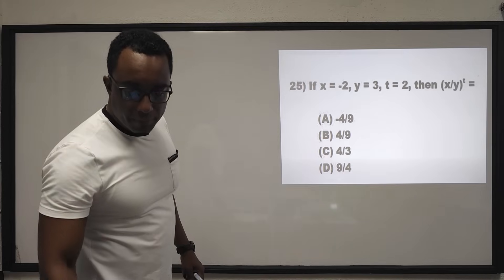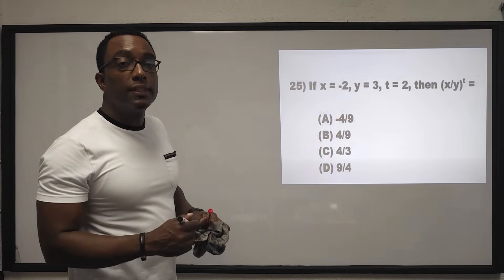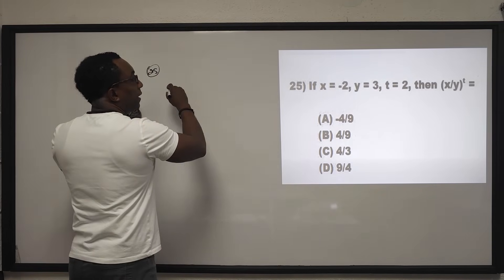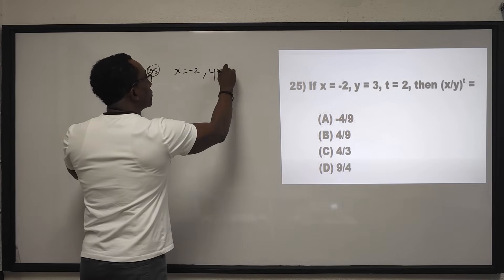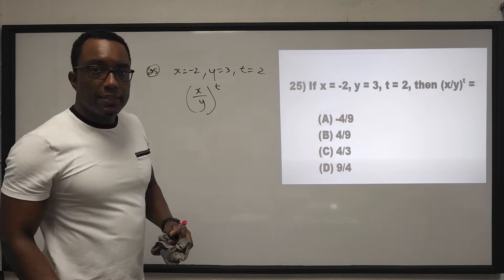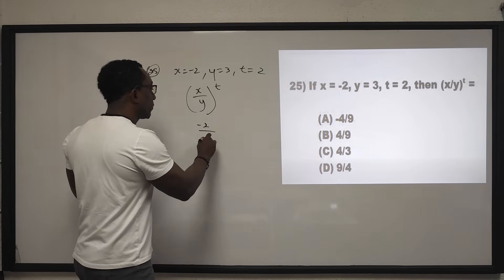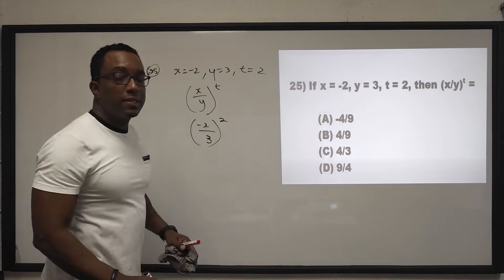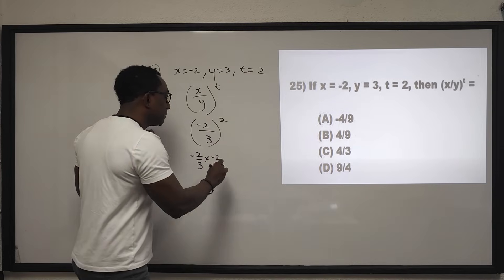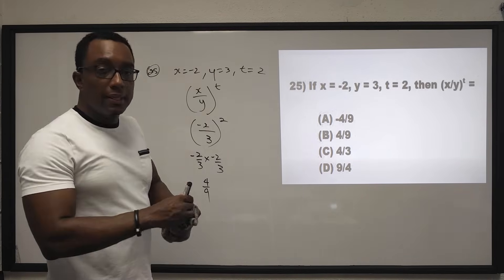Question 25: if X equals negative 2, Y equals 3, T equals 2, then X over Y to the power of T. Substituting: negative 2 over 3, all squared. That is negative 2 thirds times negative 2 thirds, which gives positive 4 over 9. The answer is B.